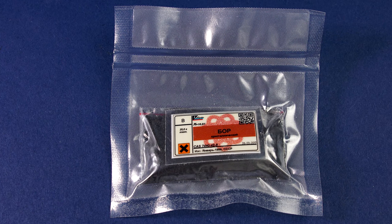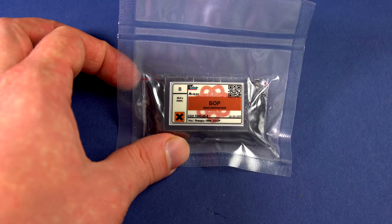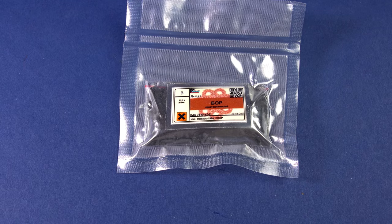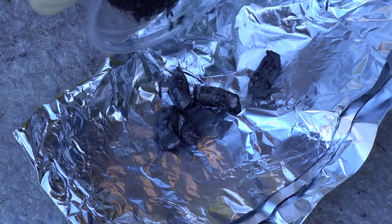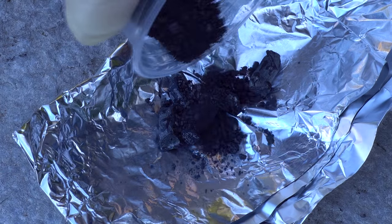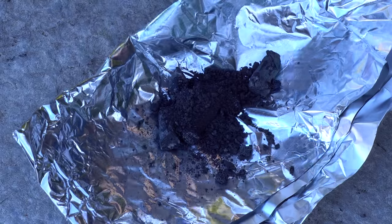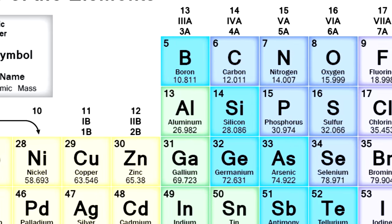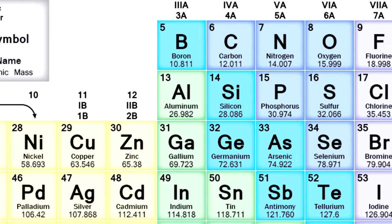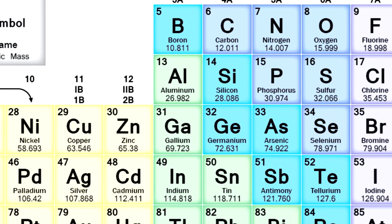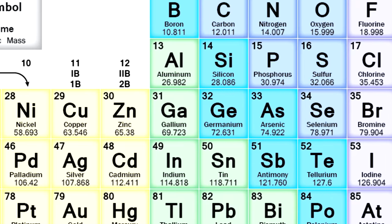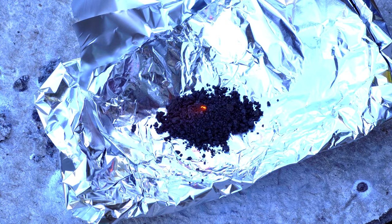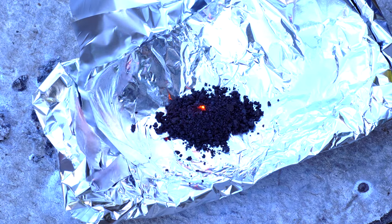However, I'll try to show you something interesting. One would think that since boron is placed between metals and non-metals, it should have properties of both classes. To start with, I heated up small bits of crystalline boron with a gas burner and watched the process.